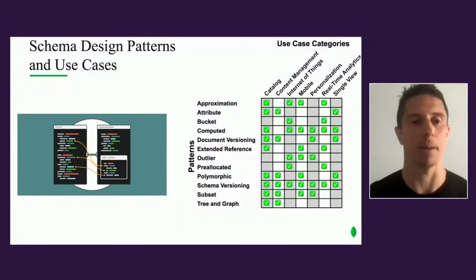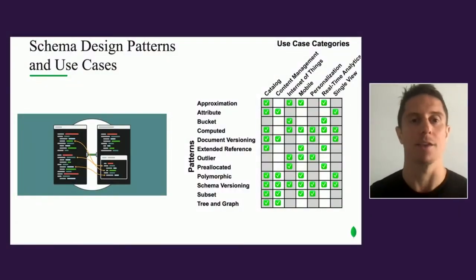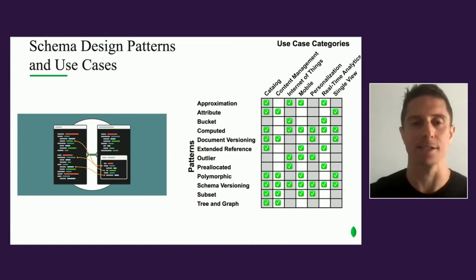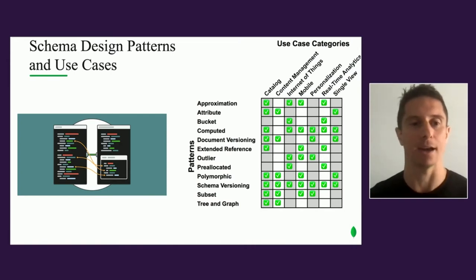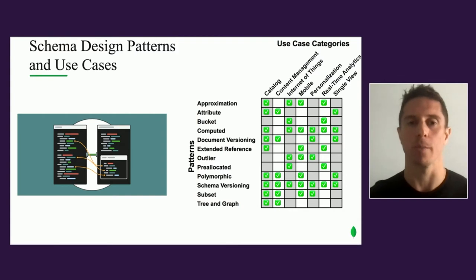These are some of the patterns that have been identified by MongoDB working with customers worldwide. This is again a rule of thumb — it does not mean that all catalogs need to use the attribute pattern. We'll talk more about that in a minute, but this should be a good reference for the future.